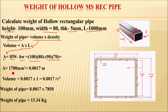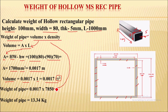After calculating the area and multiplying by the length, we get the volume as 0.0017 meter cube. Now we are considering this is an MS pipe, so the density for steel is 7850 kg per meter cube. We will put all values into the relation: weight equals volume into density, where volume is 0.0017 meter cube and density is 7850 kg per meter cube.